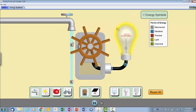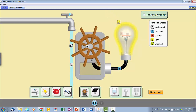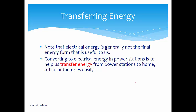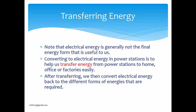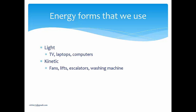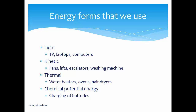The key is to turn the turbine. Note that electrical energy is generally not the final useful form of energy. Converting to electrical energy in a power station helps us transfer energy from the power station to homes, offices, and factories more easily. After transferring, we convert electrical energy back to the required forms: light energy for TVs and computers, kinetic energy for fans, lifts, and washing machines, thermal energy for water heaters and ovens, and even chemical potential energy to charge our batteries for phones and tablets.